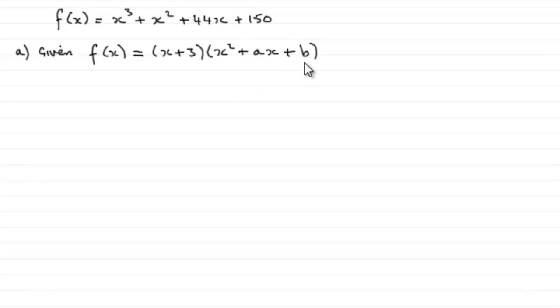The way I would do this is to say that I can get the values of x squared plus ax plus b just by simply dividing f(x) by x plus 3. So I would start off by saying x squared plus ax plus b equals f(x) divided by x plus 3. So what this means is that I need to do some algebraic long division here. x plus 3 into x cubed plus x squared plus 44x plus 150, and I'm expecting it to go in exactly.